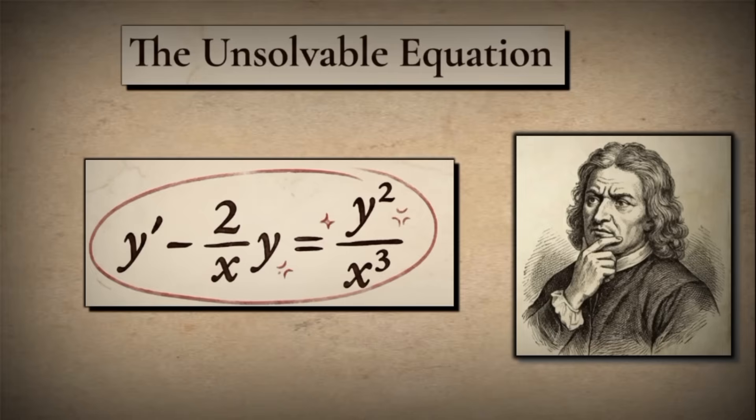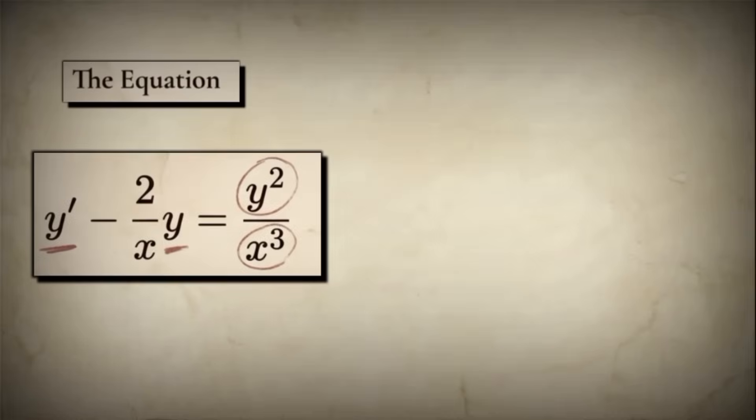Today, we're going to see what happens when separation of variables fails. We're going to discover how Bernoulli overcame this obstacle with a revolutionary strategy called variation of parameters. This is the story of Bernoulli equations and how we solve the unsolvable. Let's look more closely at this equation: y' minus 2/x times y equals y² over x³.